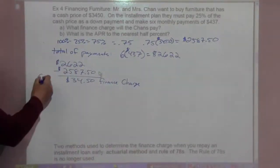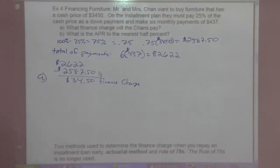So that's the finance charge. Then for Part B, what is the APR to the nearest half percent?